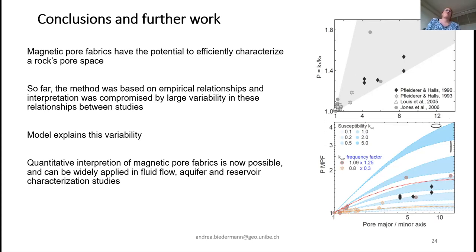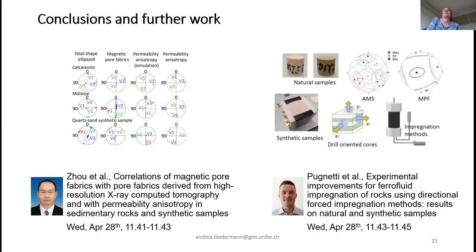To sum up, the method of magnetic pore fabrics has the potential to efficiently characterize a rock's pore space. So far, interpretation was somewhat compromised because we only had empirical relationships and the differences between studies were quite large. But we now have a model that explains this variability, and quantitative interpretation is now possible. We are hoping the method will be much more applied for fluid flow studies, aquifer and reservoir characterization, and maybe also geothermal and CO2 applications. I'm also advertising other work going on in my group to be presented at EGU — one student correlating magnetic pore fabric results with other methods, another working on improving impregnation methods. I'm very happy to take questions.